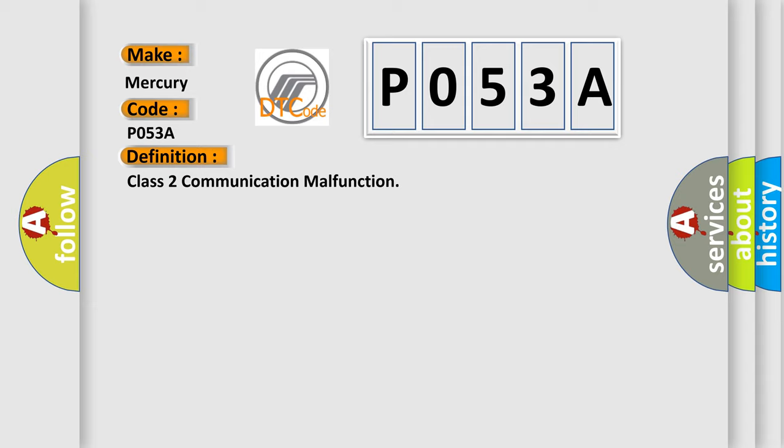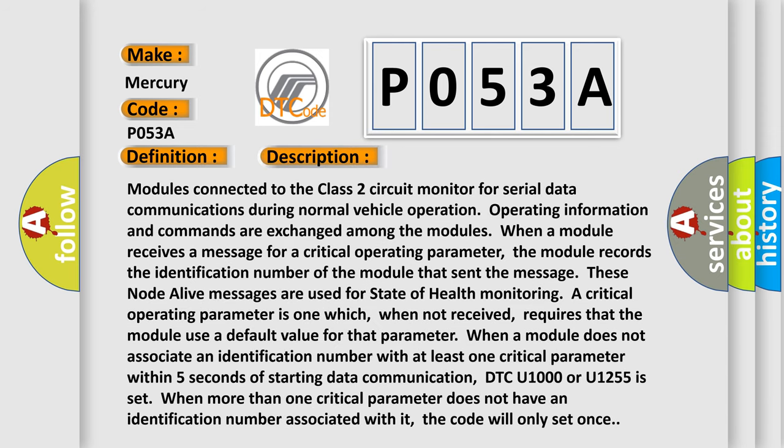The basic definition is Class 2 communication malfunction. And now this is a short description of this DTC code. Modules connected to the Class 2 circuit monitor for serial data communications during normal vehicle operation. Operating information and commands are exchanged among the modules. When a module receives a message for a critical operating parameter,